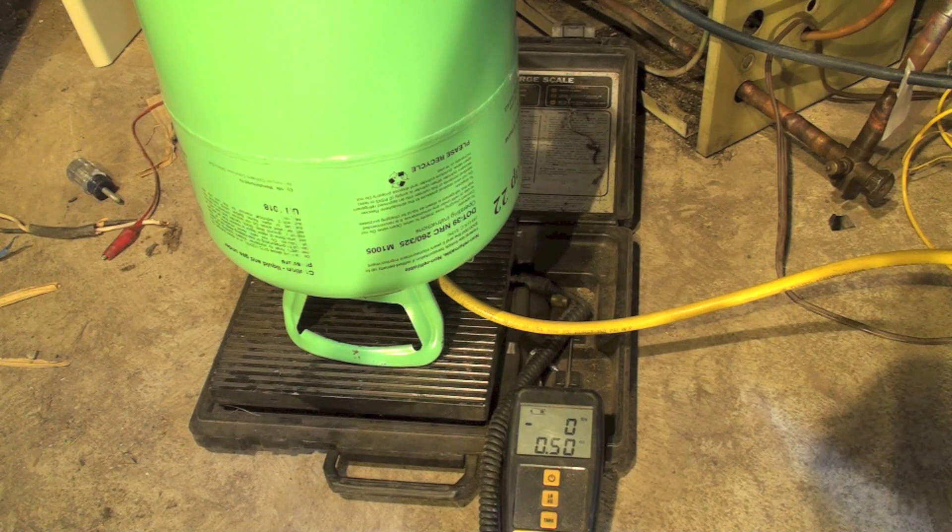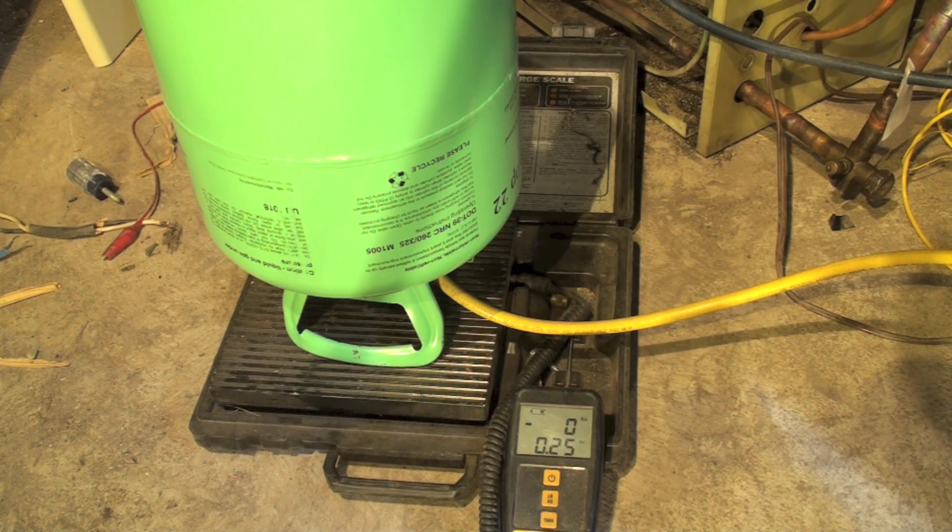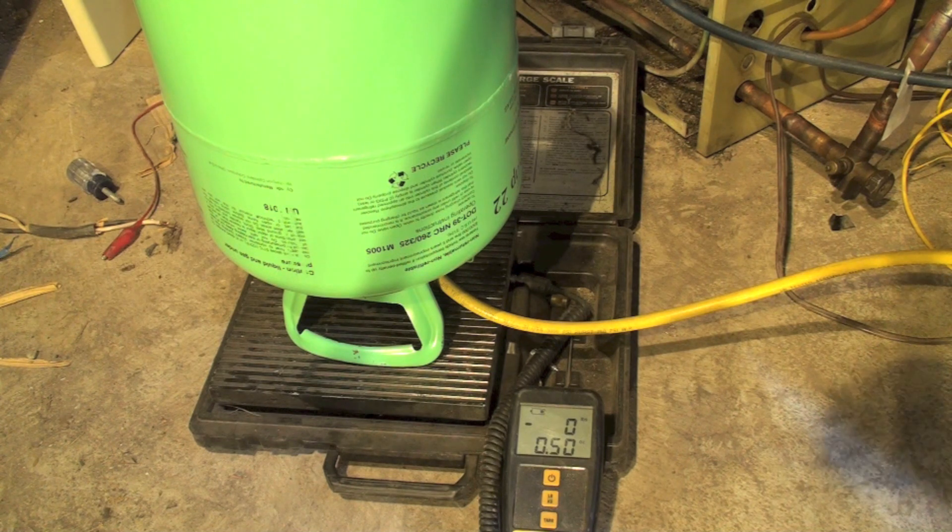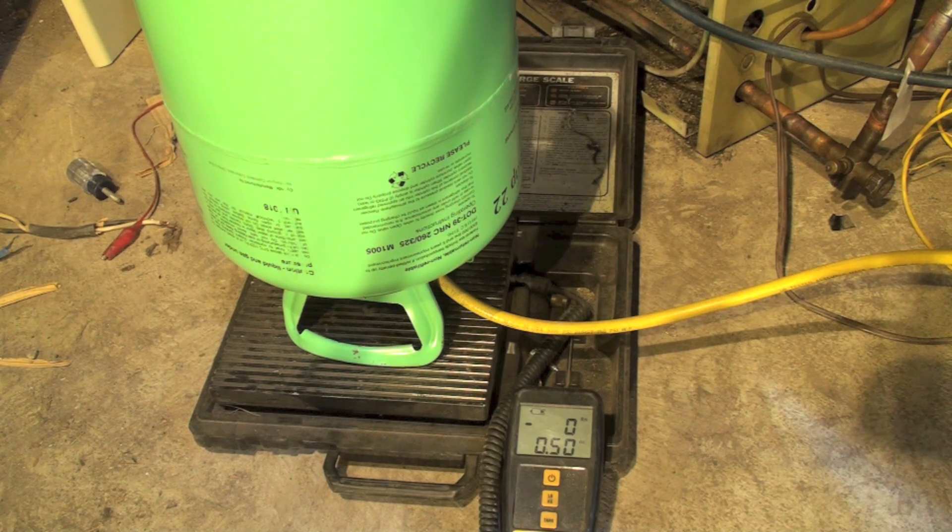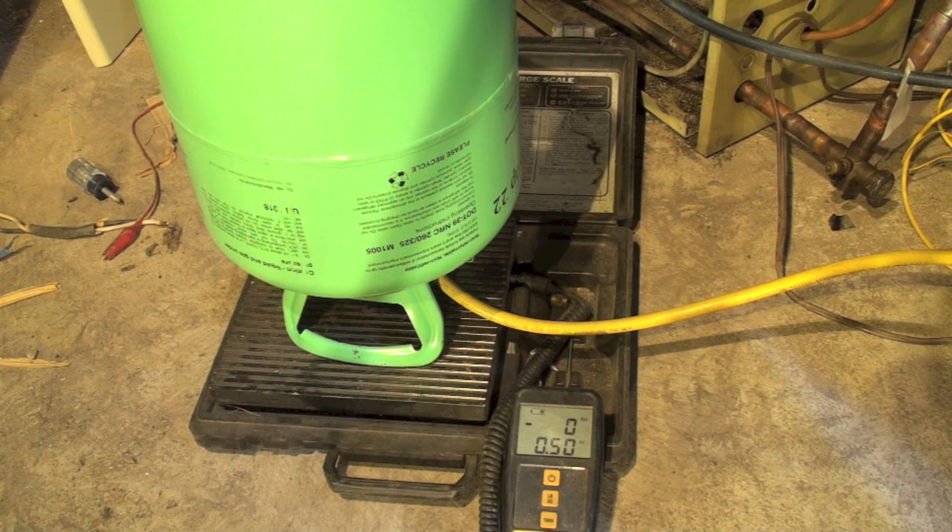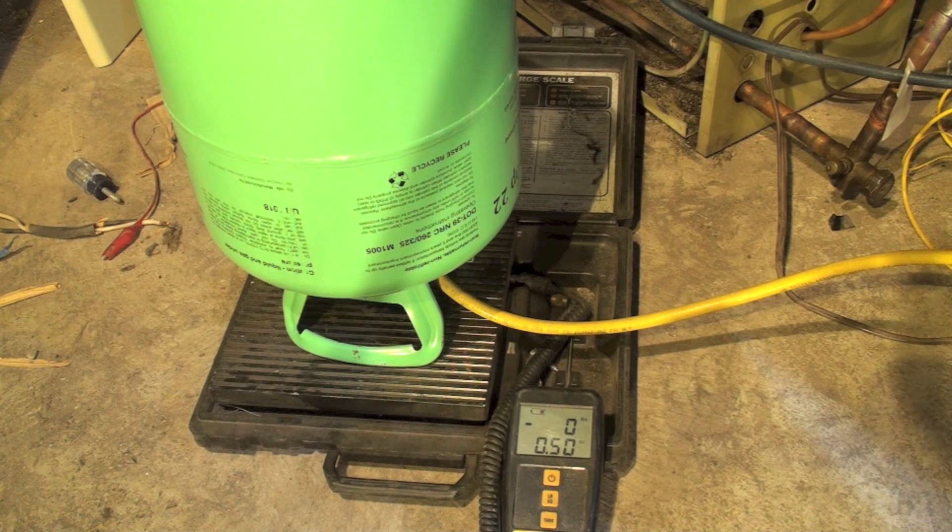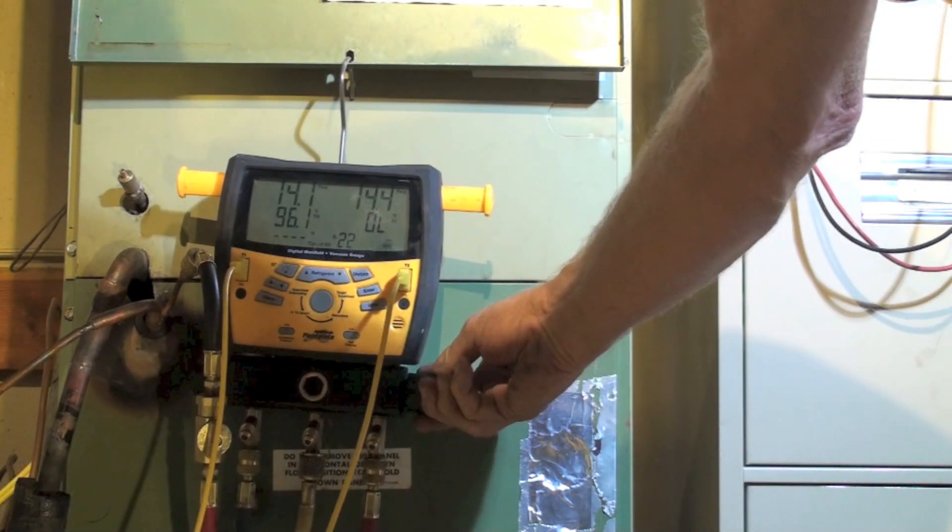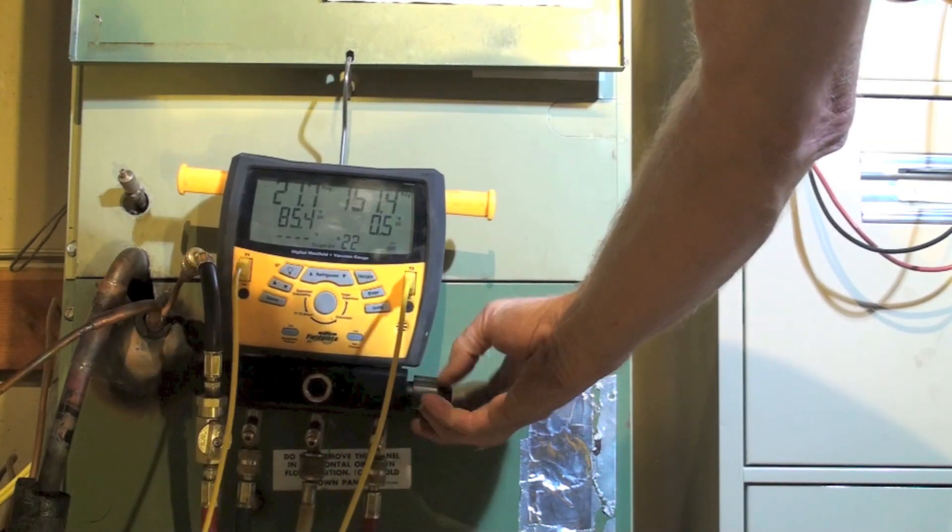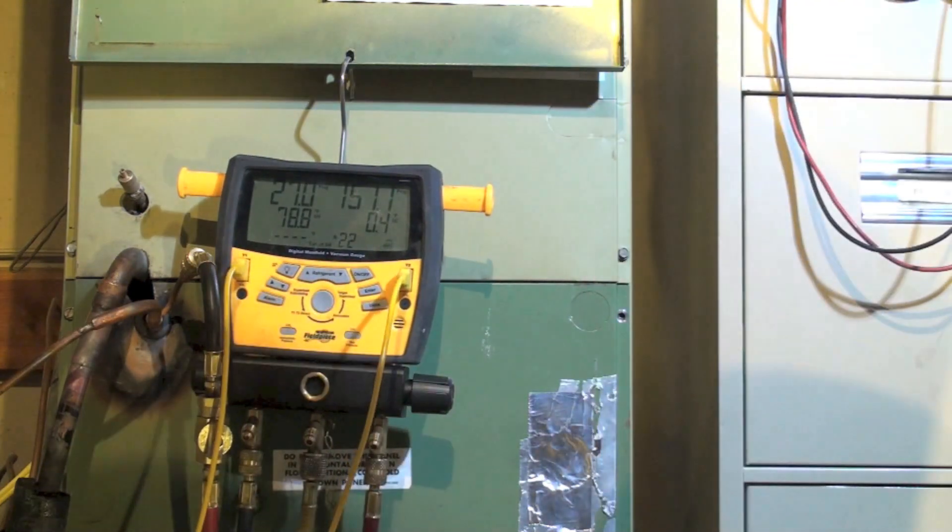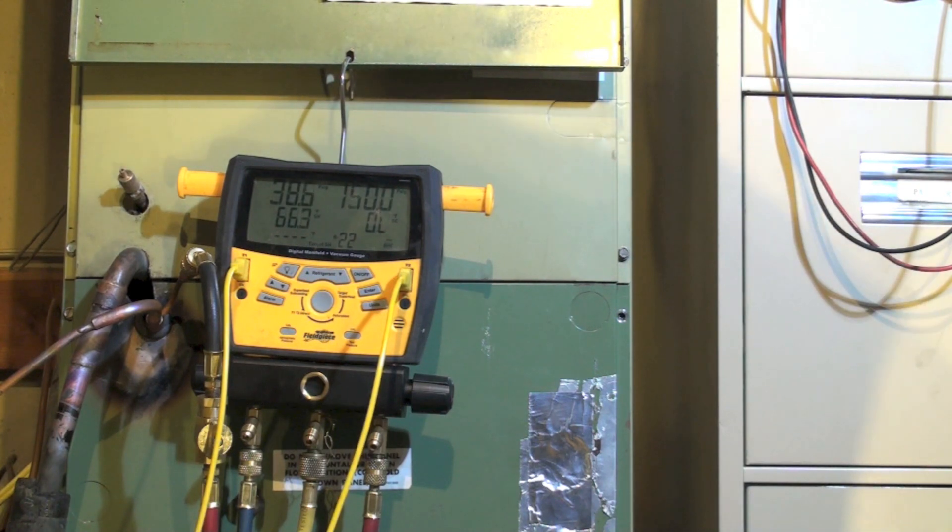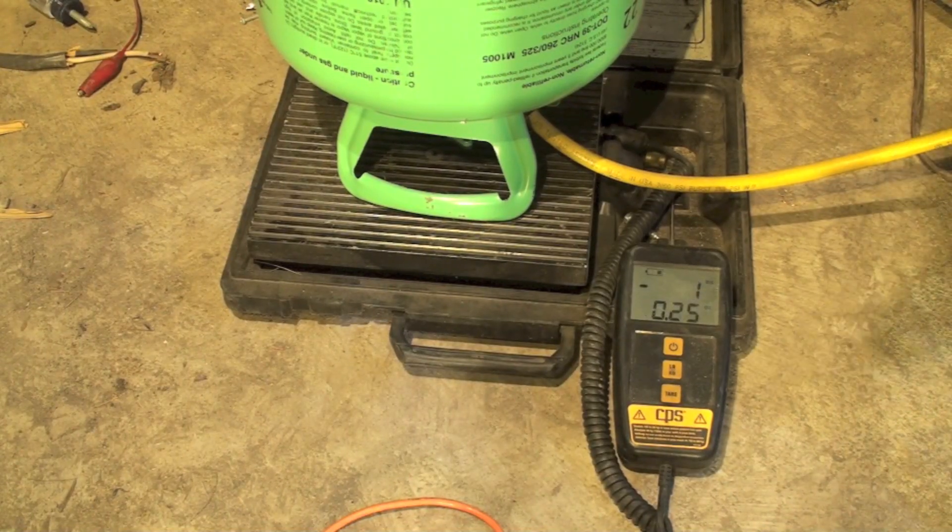Okay, again this is R22, so we have seven and a half pounds as a factory charge. We've got a 25-foot line set. That's probably going to be the right amount. We are going to check it with target superheat. Opening the high side valve, listen close you can hear it go in. I'm going to go back to the scale so you can see how we're doing. Okay, see we've got a little over a pound so far.